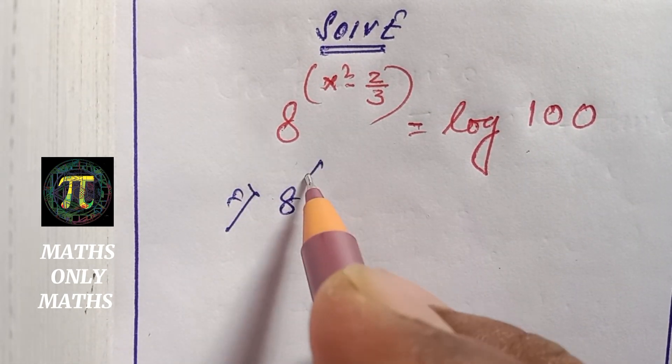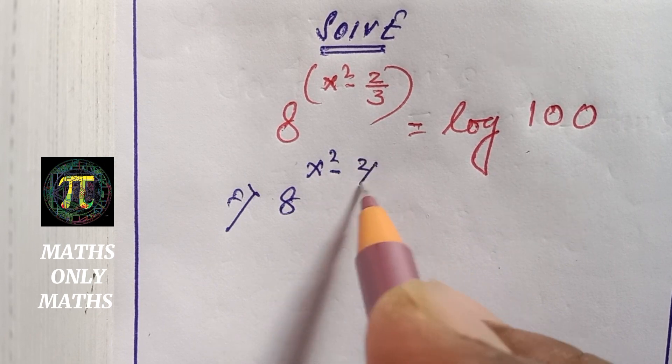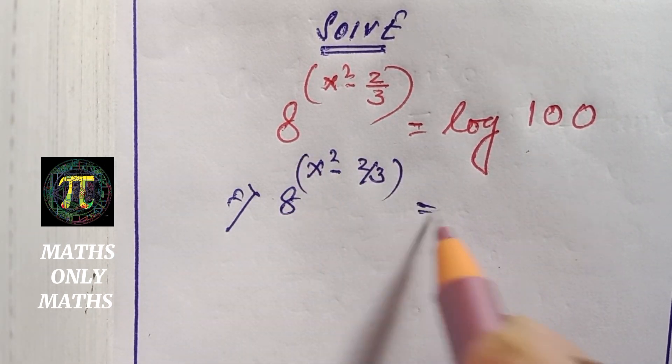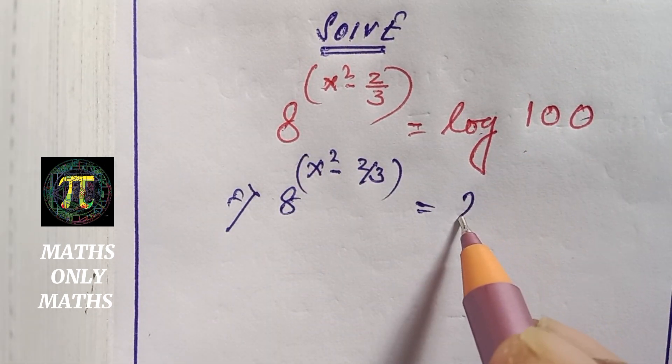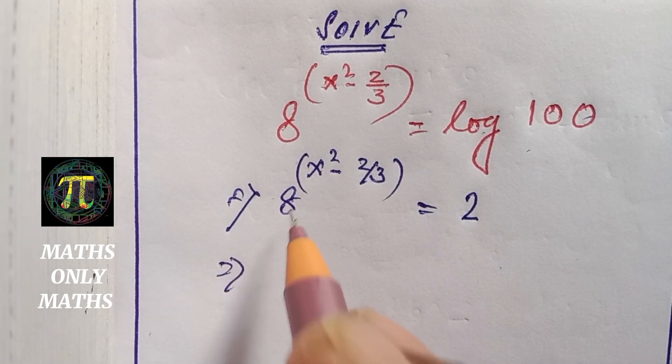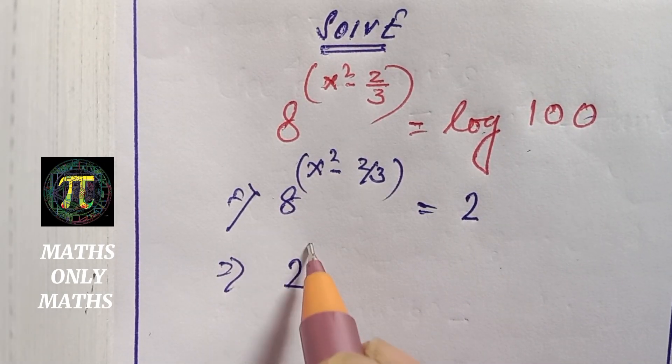I can write 8 to the power x squared minus 2/3 equals to log 100 is 2. Now 8 is 2 cubed.